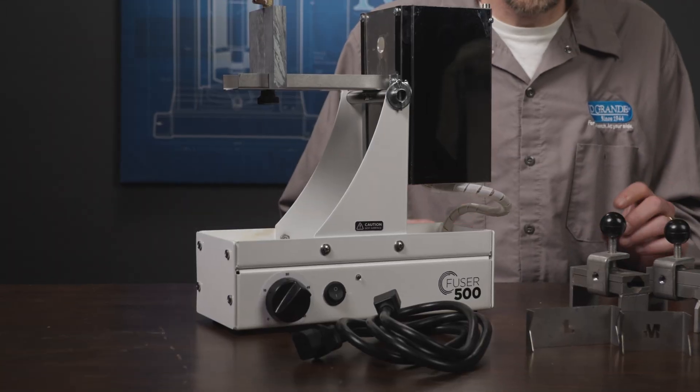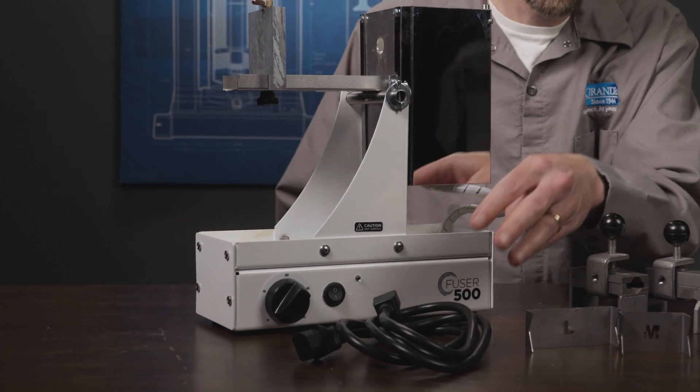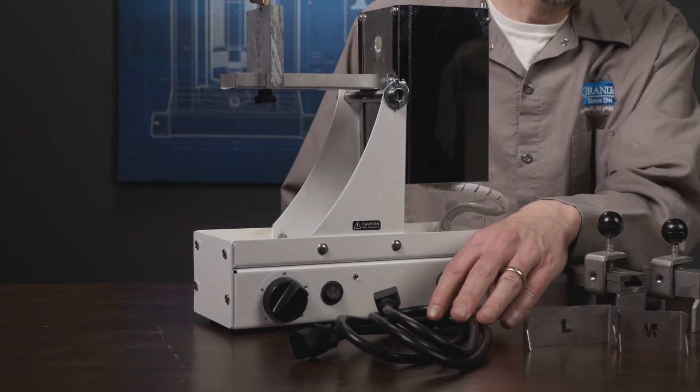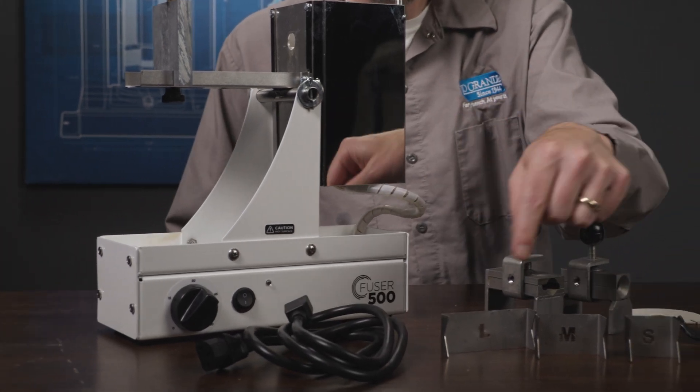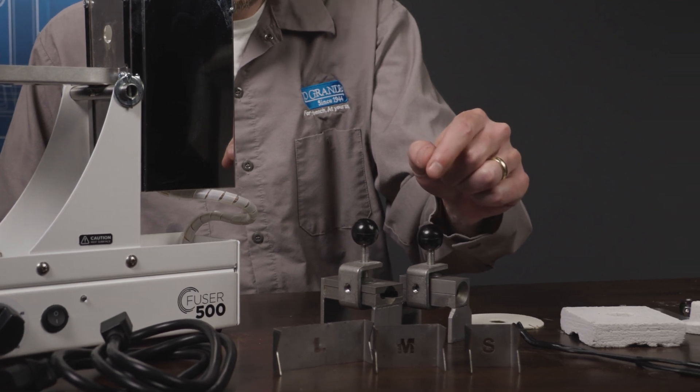First let's take a look at everything that's included in the kit. We have the melting furnace itself, the power cord for the melting furnace, and three flask cradles that correspond to the flasks that come with the Fuser 500 casting system.